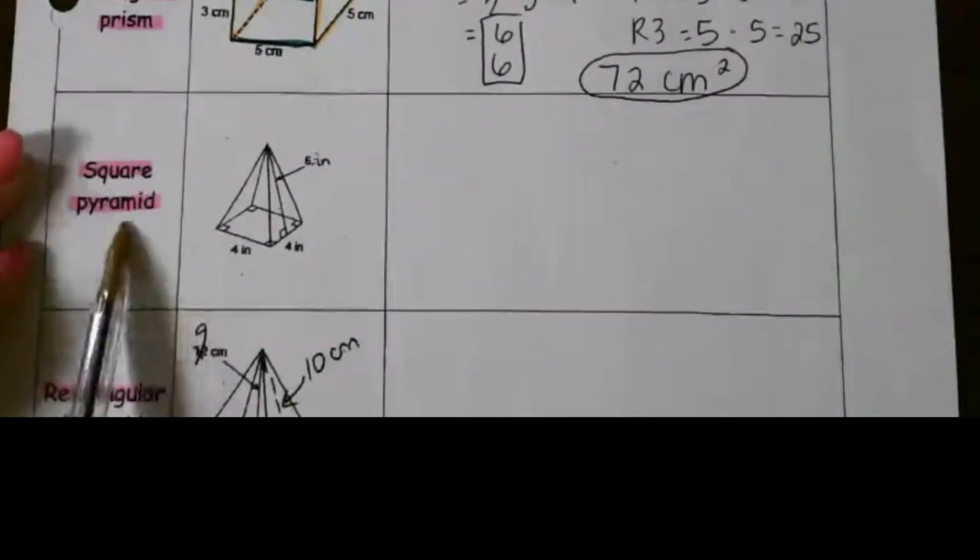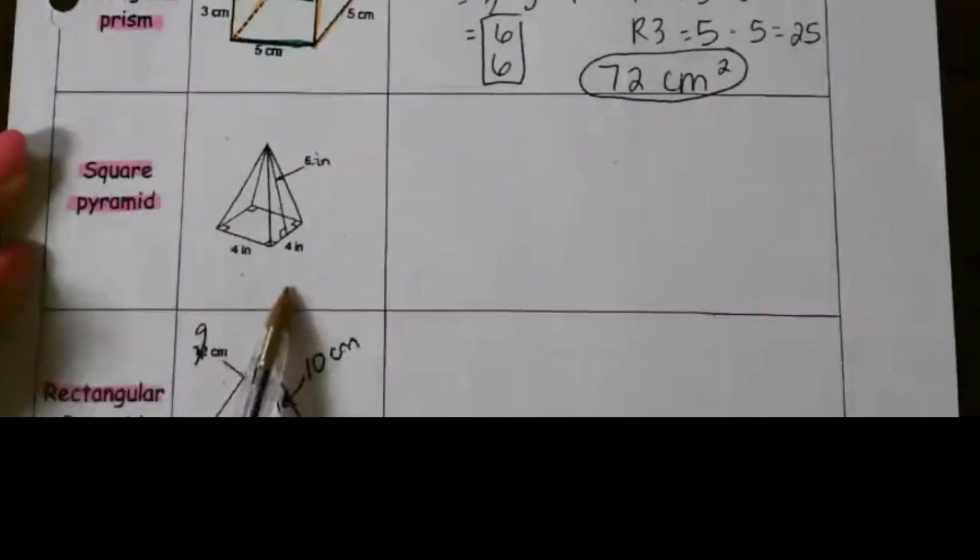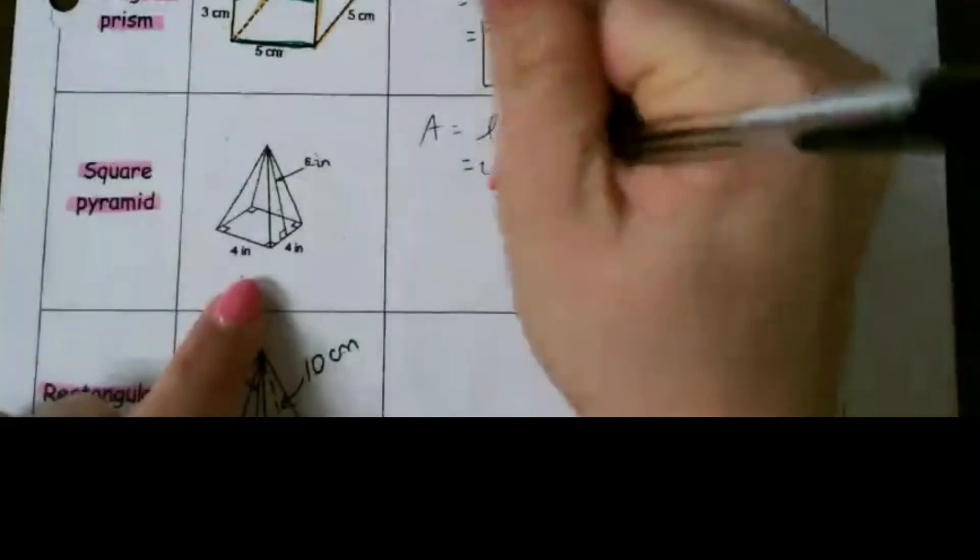Let's take a look at surface area of a square pyramid. First, we need to find the area of the square, which is length times width. For this square, it's 4 times 4.